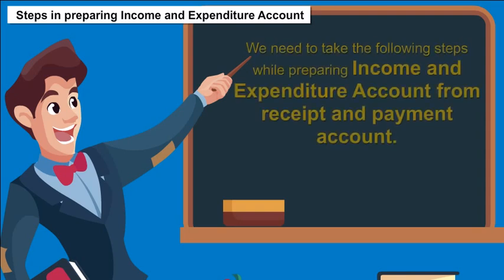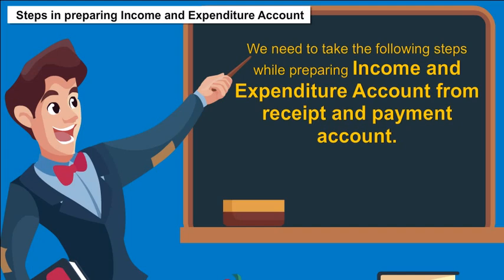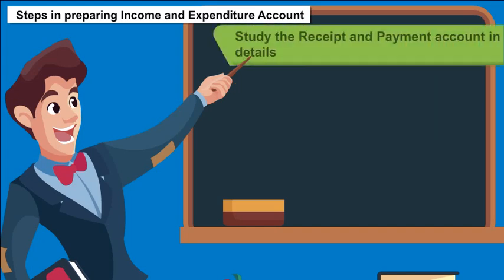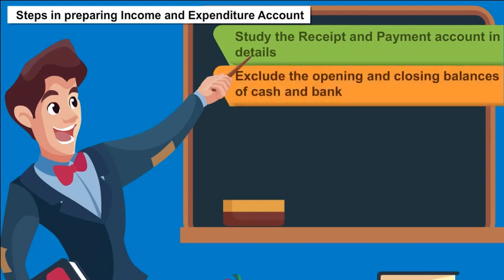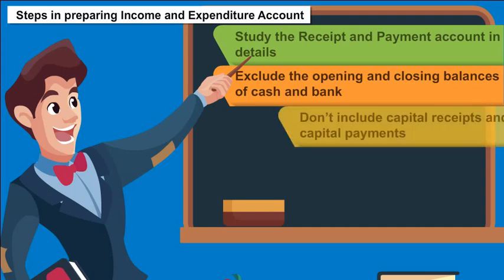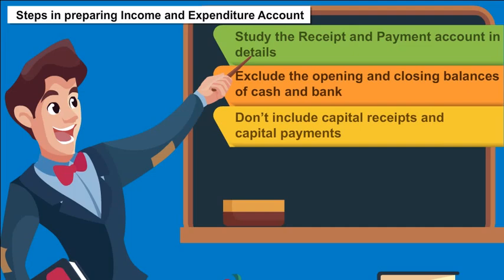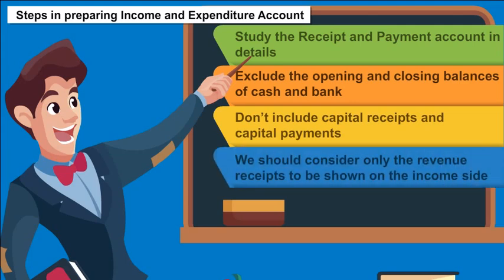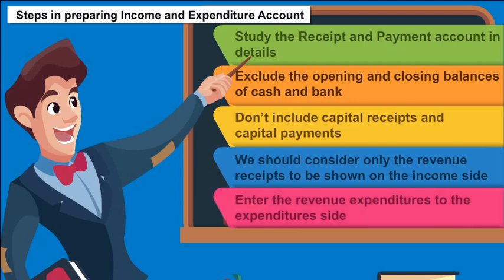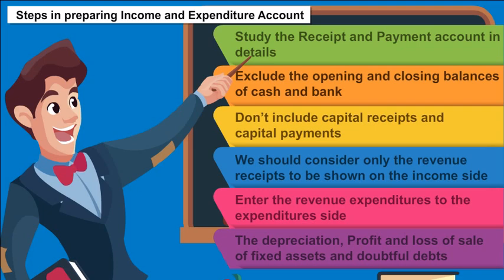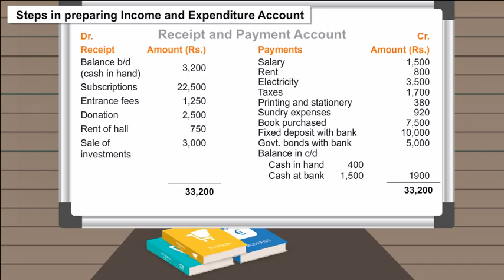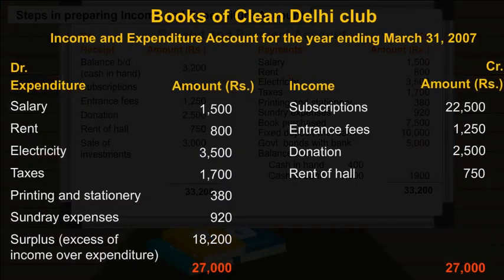Steps in preparing income and expenditure account from receipt and payment account: study the receipt and payment account in detail; exclude the opening and closing balances of cash and bank from the income and expenditure account; do not include capital receipts and capital payments, as these will be reflected in the balance sheet; consider only revenue receipts to be shown on the income side; enter revenue expenditures on the expenditure side. Depreciation, profit and loss on sale of fixed assets, and doubtful debts are also considered in the income and expenditure account. For example, from the receipt and payment account given below, prepare the income and expenditure account of Clean Delhi Club for the year ended March 31st, 2007.